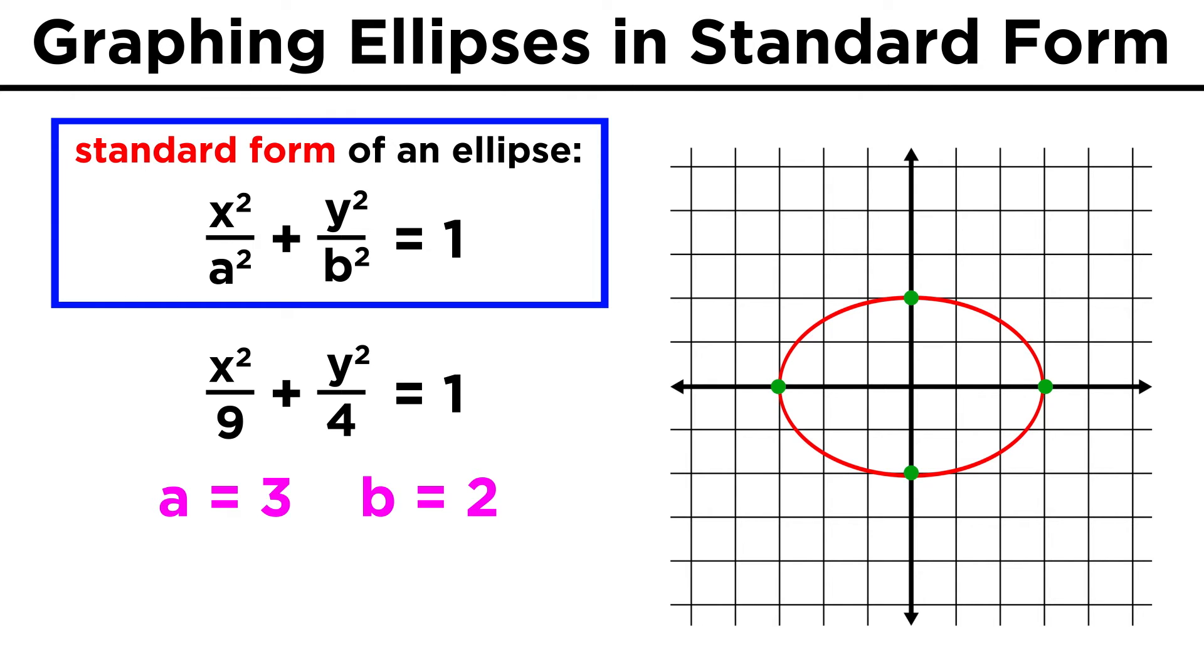The foci are not part of the ellipse, but if we need those as well, that will come from C squared equals nine minus four, or C equals plus or minus root five.